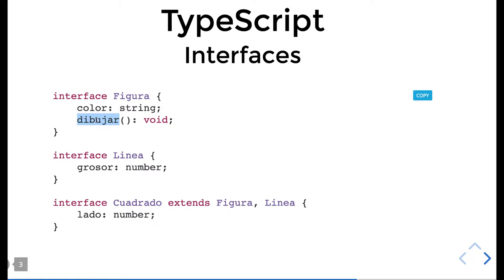This interface also has a function as a property. Here is another interface where one interface can extend another interface. So here what I'm doing is showing another interface which is extending 'Figura' and 'Linear'. So an interface can extend one another, and here we have another property while all the other properties are already extended in this interface.